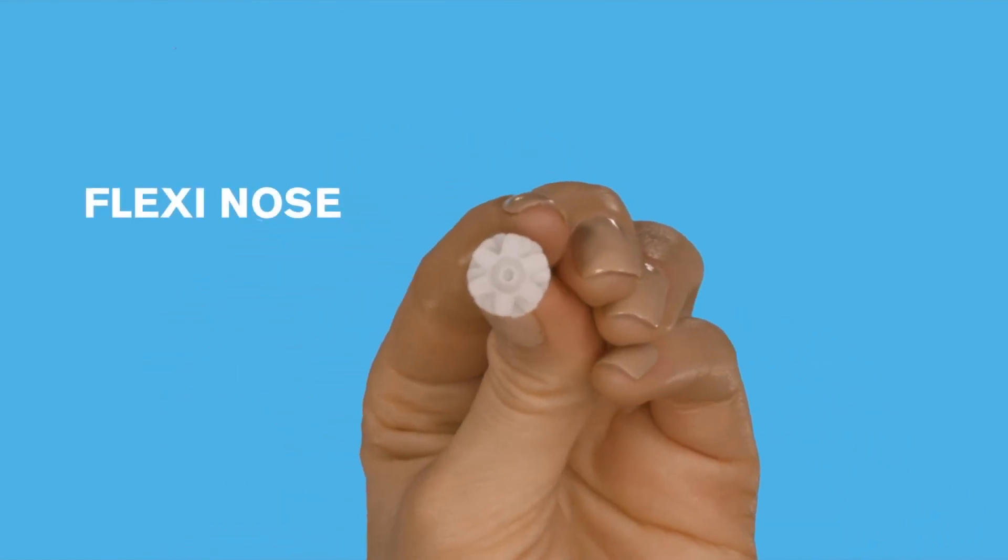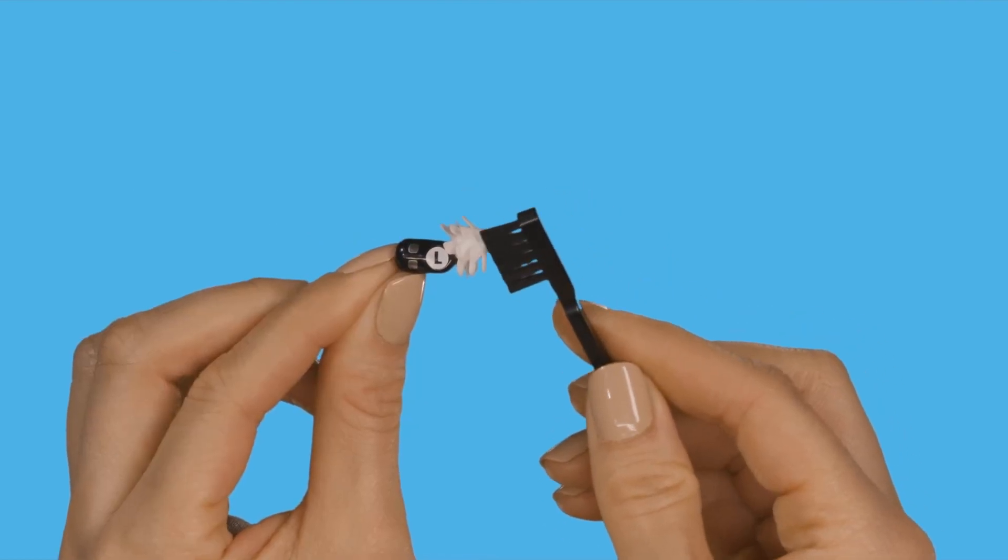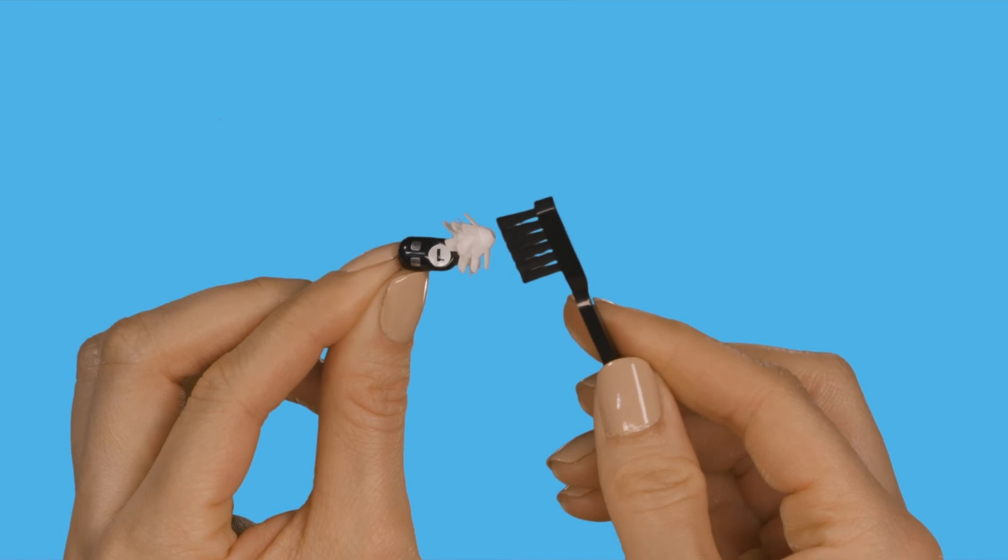Visually look at the tip of the flexi. You should be able to see the white tip with small holes. Brush out the nose of the flexi, brushing the wax away from the device.